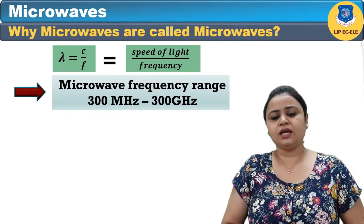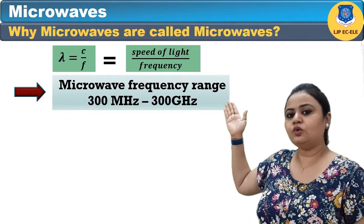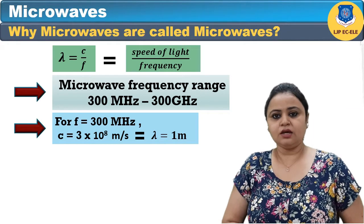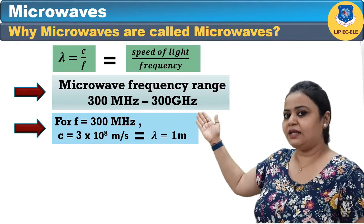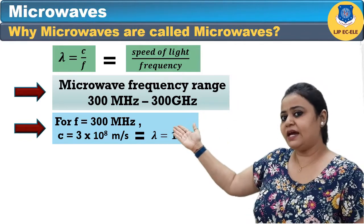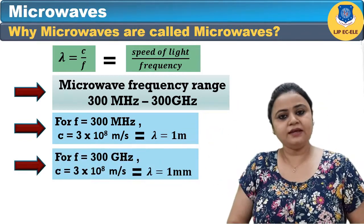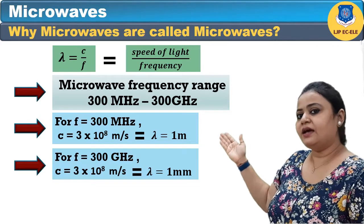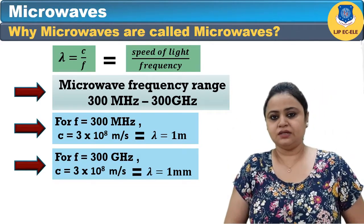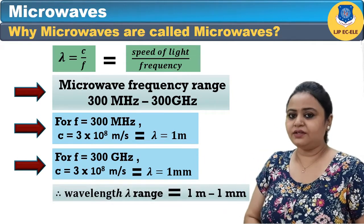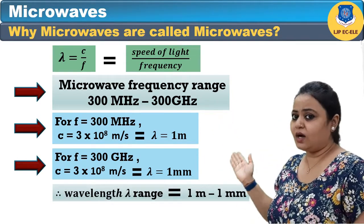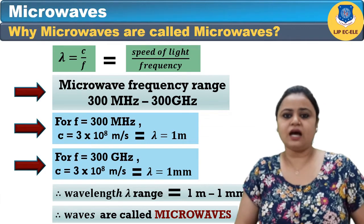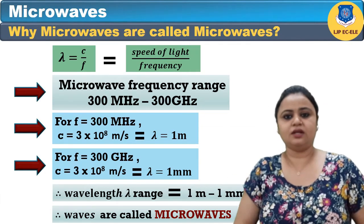The microwave frequency range is from 300 megahertz to 300 gigahertz. If we calculate wavelength for a frequency of 300 megahertz using lambda = C/F, we get a lambda value of 1 meter, and if we calculate wavelength for 300 gigahertz, then lambda value will be 1 millimeter. So wavelength ranges from 1 centimeter to 1 millimeter — that is very short wavelength — and that is why these waves are known as microwaves for this particular band of frequencies.